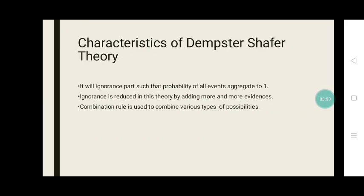Characteristics of Dempster Shafer Theory: It will account for ignorance parts such that probability of all events aggregate to 1. Ignorance is reduced in this theory by adding more and more evidences. Combination rule is used to combine various types of possibilities.